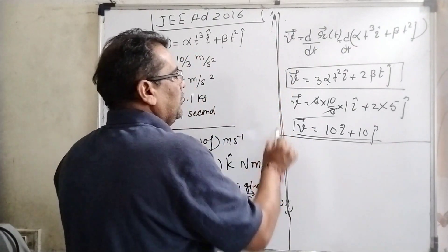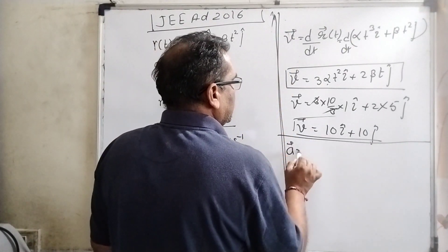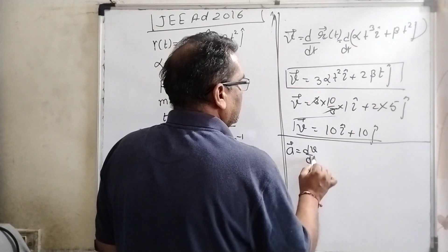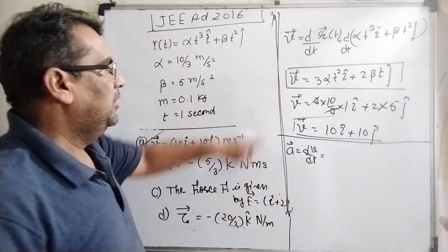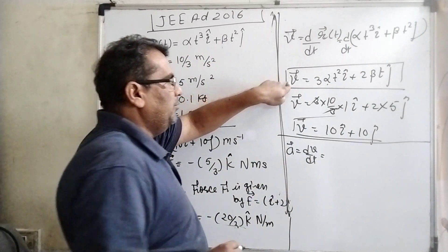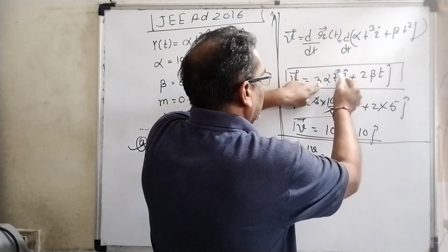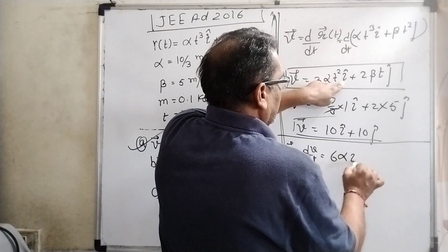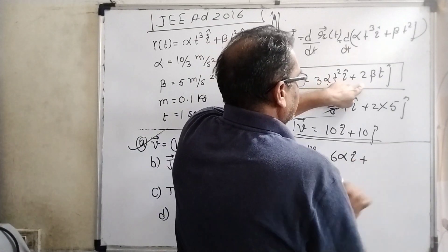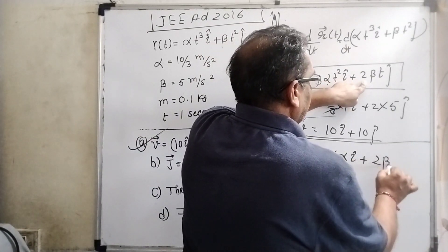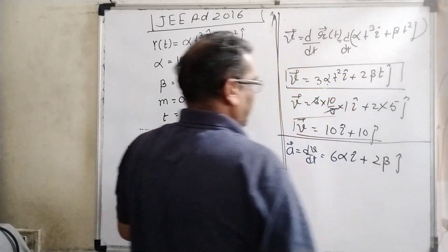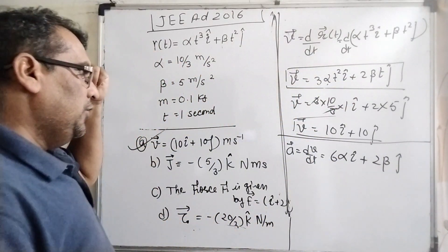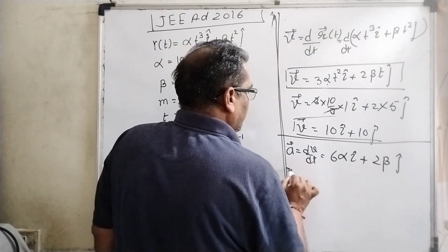Now you are well known that acceleration is the differentiation dv/dt. So again differentiate with respect to t both sides and you will get 6α i plus 2β j.